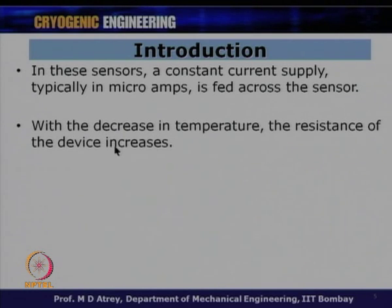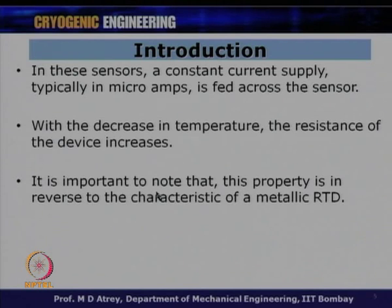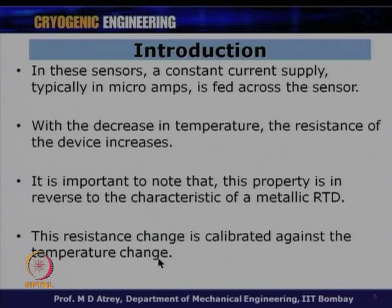With a decrease in temperature, the resistance of the device increases. This is important to note: it is the reverse of metallic RTD behavior. In metallic RTDs, resistance decreased as temperature decreased. In non-metallic sensors, resistance increases as temperature decreases. This resistance change is calibrated against temperature change, so resistance becomes a function of temperature and one can fit a calibration curve.